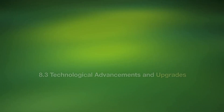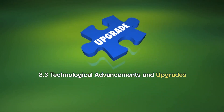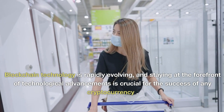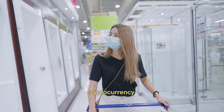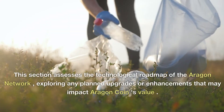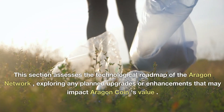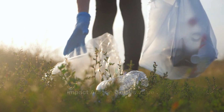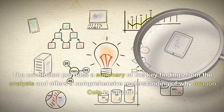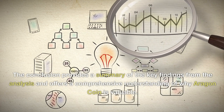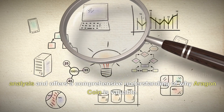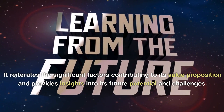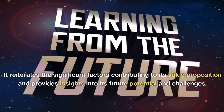8.3 Technological Advancements and Upgrades — Blockchain technology is rapidly evolving, and staying at the forefront of technological advancements is crucial for the success of any cryptocurrency. This section assesses the technological roadmap of the Aragon Network, exploring any planned upgrades or enhancements that may impact Aragon Coin's value. Conclusion: The conclusion provides a summary of the key findings from the analysis, reiterates the significant factors contributing to Aragon Coin's value proposition, and provides insights into its future potential and challenges.